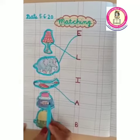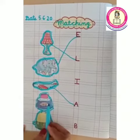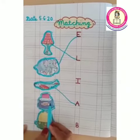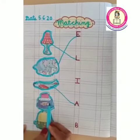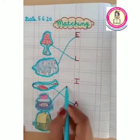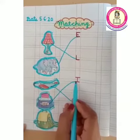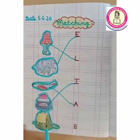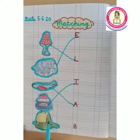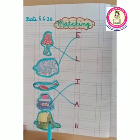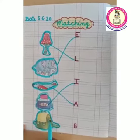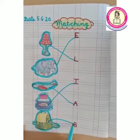Next is I. Find the letter I. Next is B. Match the letter B.